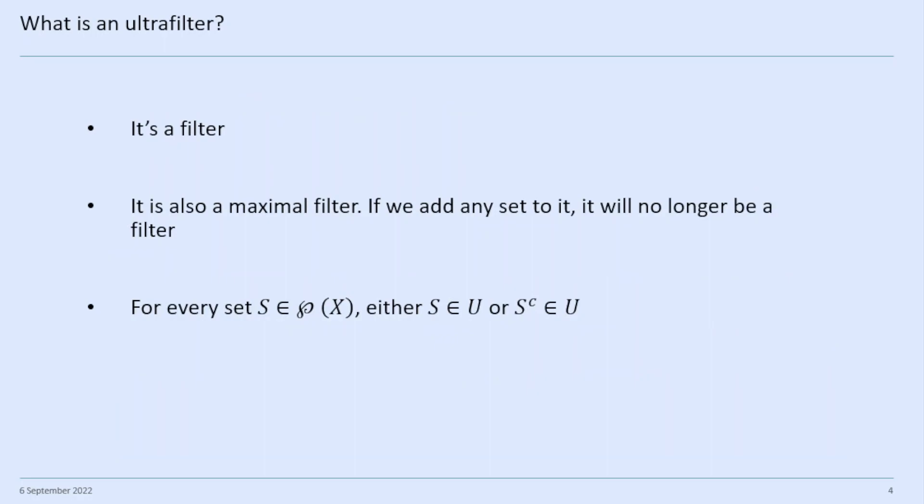What's an ultrafilter? An ultrafilter is a filter first, but it's also a maximal filter. So if we add any set to it, it will no longer be a filter, because if we add a new set and then intersect it with some of those other sets, we might get the empty set, which would then mean the filter would have to be the whole power set — which means it can't be a proper filter.